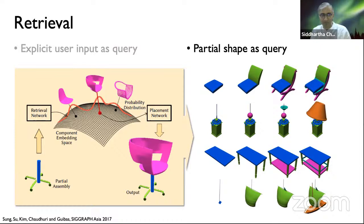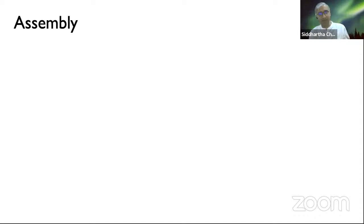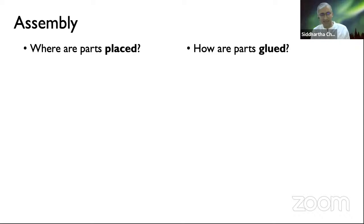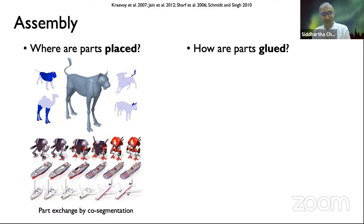Let's talk about the second axis of the trio of challenges — the actual task of assembling a set of parts once you have them. I think of this in terms of two fundamental questions: where are the parts placed, and how are they glued together to form a seamless overall assembly? One classical approach is to put different shapes in correspondence at the point or part level, then swap parts between them — if the legs of two different animals correspond, you can swap them out and the position of the original legs tells you where the new legs should go. There's also work done on gluing parts together using inter-surface mapping — you put two parts close to each other, build a map between the overlapping surfaces, and iteratively solve an optimization problem to deform local regions for a smooth join.